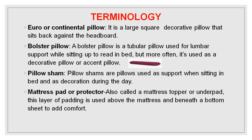Some important terminologies: A Euro or continental pillow is a large square decorative pillow which sits back against the headboard. A bolster pillow is a tubular pillow used for lumbar support while sitting up to read in bed, but more often used as a decorative or accent pillow. Pillow shams are pillows used for support when sitting in bed and as decoration during the day. A mattress pad or protector, also called a mattress topper or under pad, is a layer of padding used above the mattress and beneath a bottom sheet to add comfort and absorb spillages.